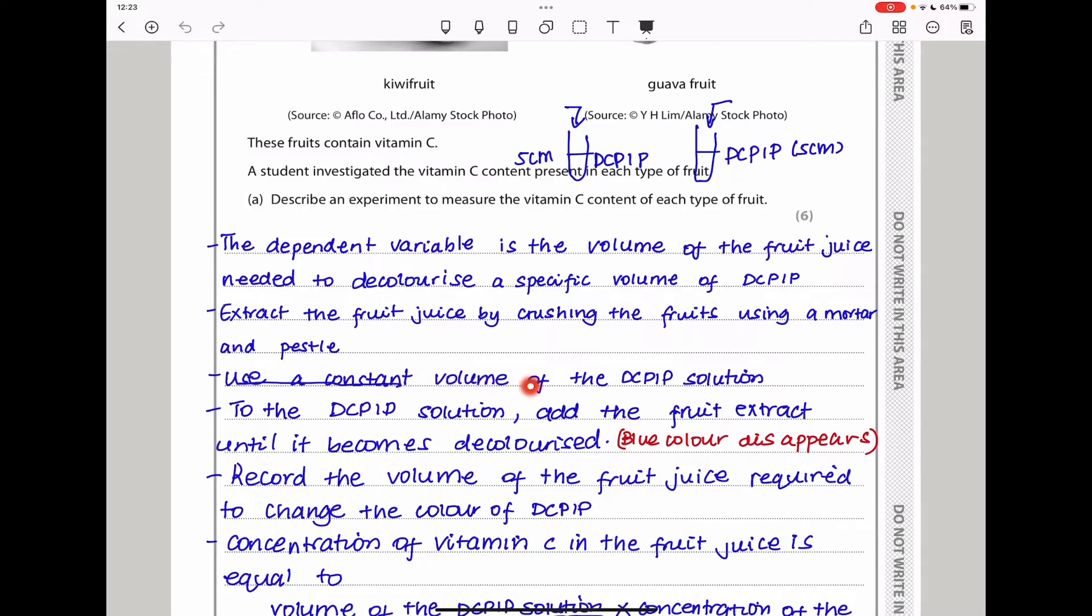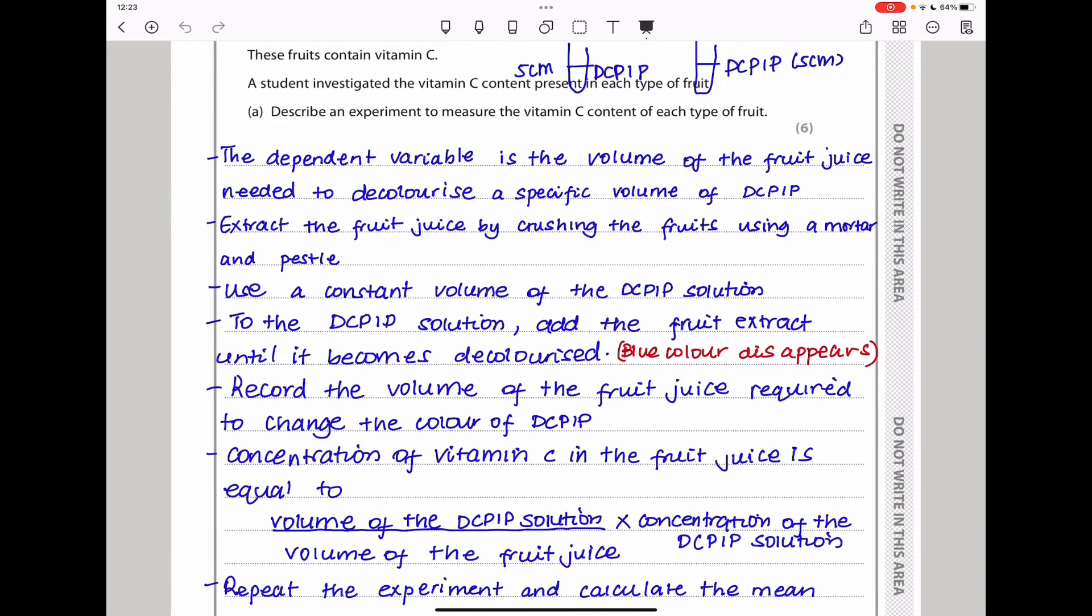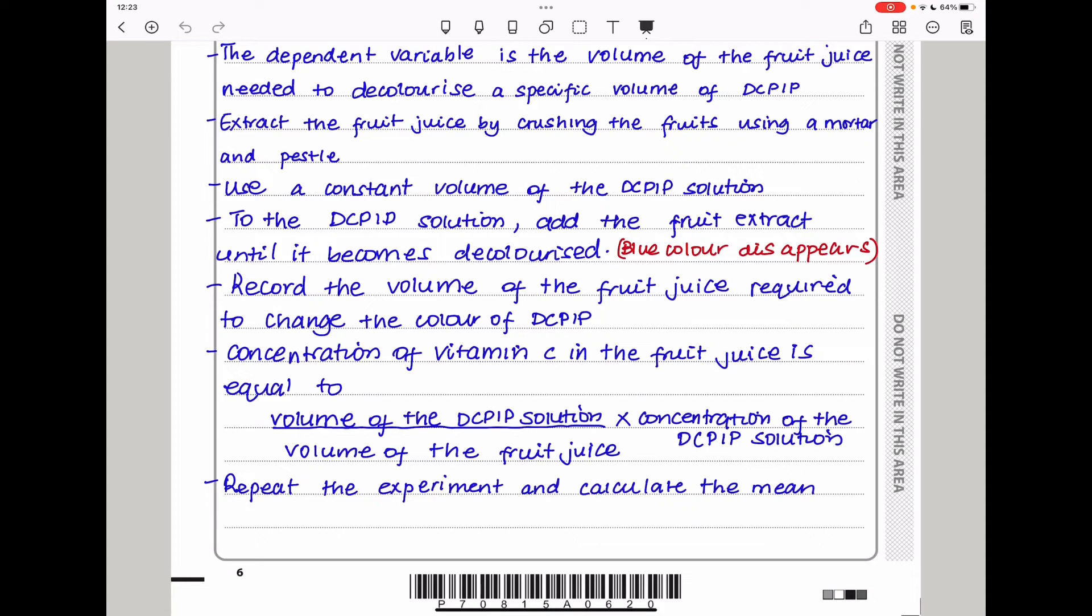Use a constant volume of the DCPIP solution, for example 5 centimeters for all the experiments because you want everything to be the same. To the DCPIP solution, add the fruit extract until it becomes decolorized. It's originally going to be a blue color and then that blue color will disappear. Then we can know that the volume of the fruit solution we have added was sufficient to decolorize the DCPIP solution. You will record the volume of the fruit juice required to change the color of the DCPIP.